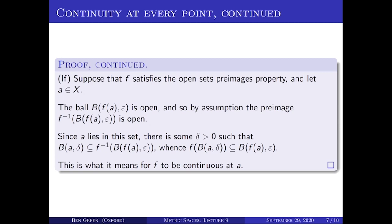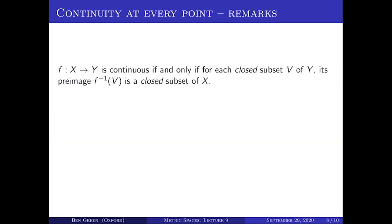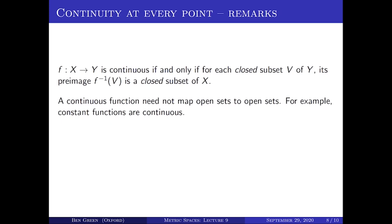So we've proved two very similar theorems characterising, first, continuity at a point and then continuity everywhere, in terms of first neighbourhoods and then open sets. A few remarks: by taking complements, you can quite easily show that equivalently a map from X to Y is continuous if and only if for every closed subset V of Y, the preimage F⁻¹(V) is a closed subset of X. I'll leave that as an exercise. Now, here's something important: a continuous function need not map open sets to open sets. The constant function one is a continuous function from ℝ to ℝ and it maps all of ℝ just to the point one, which is not open.